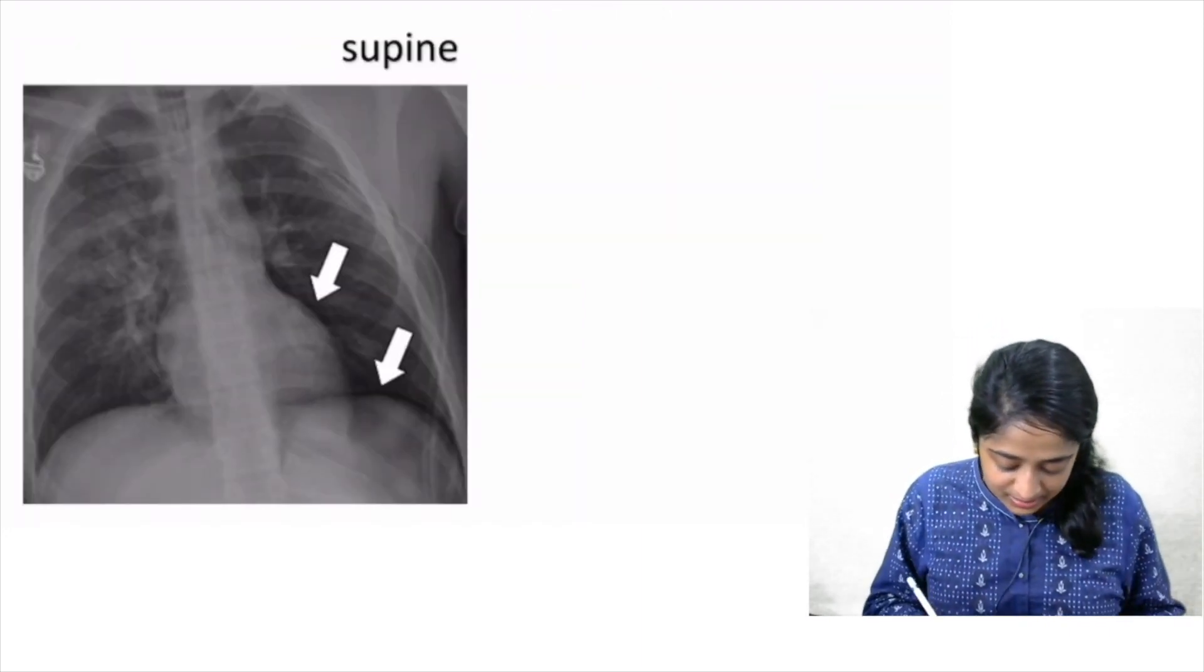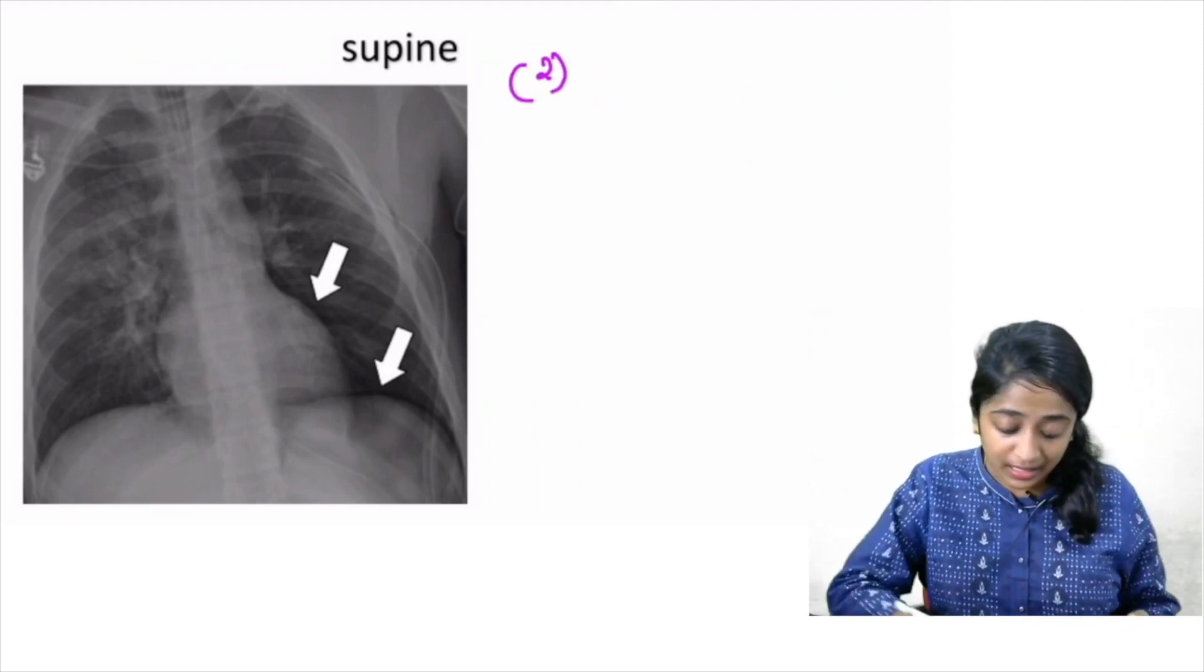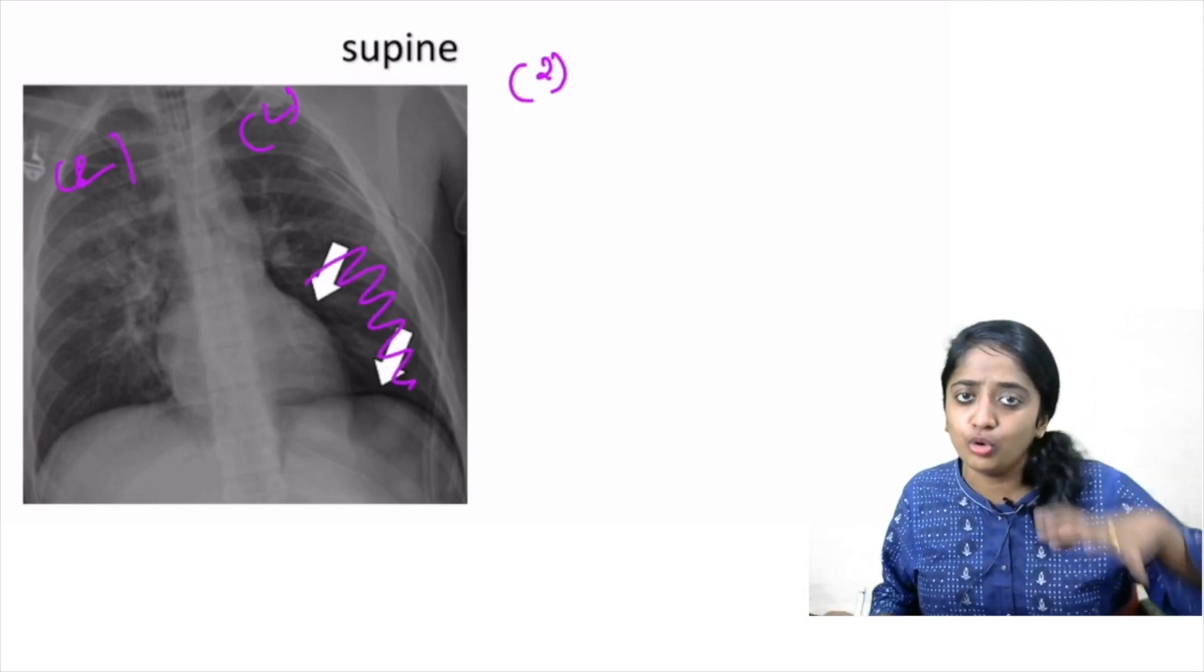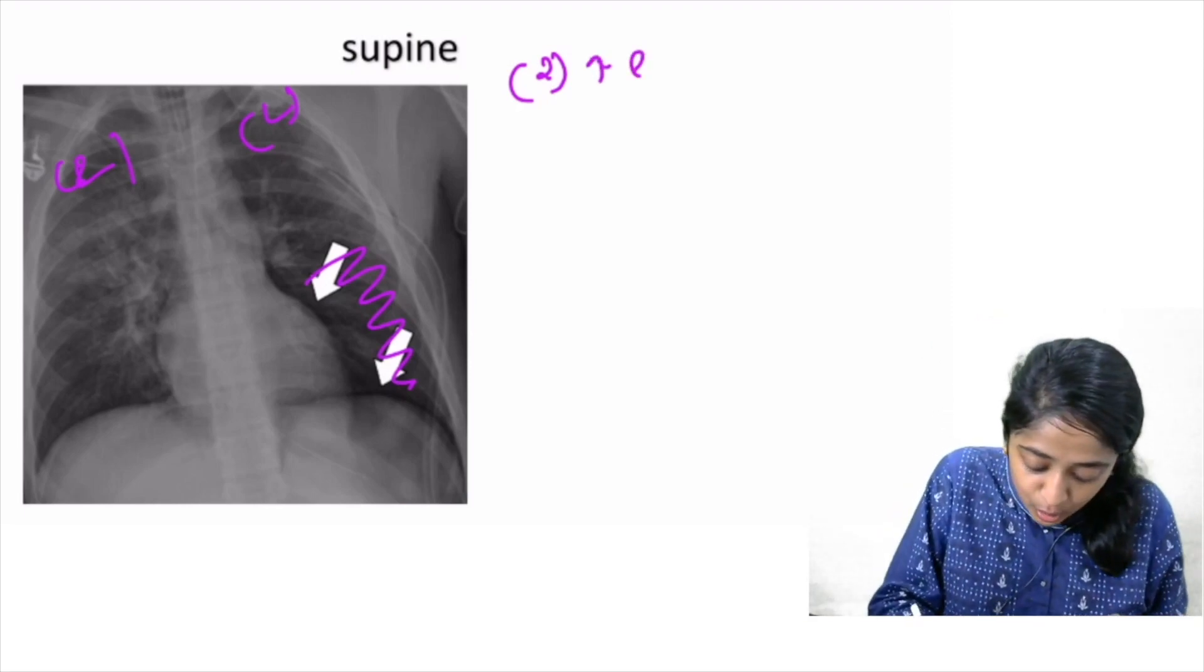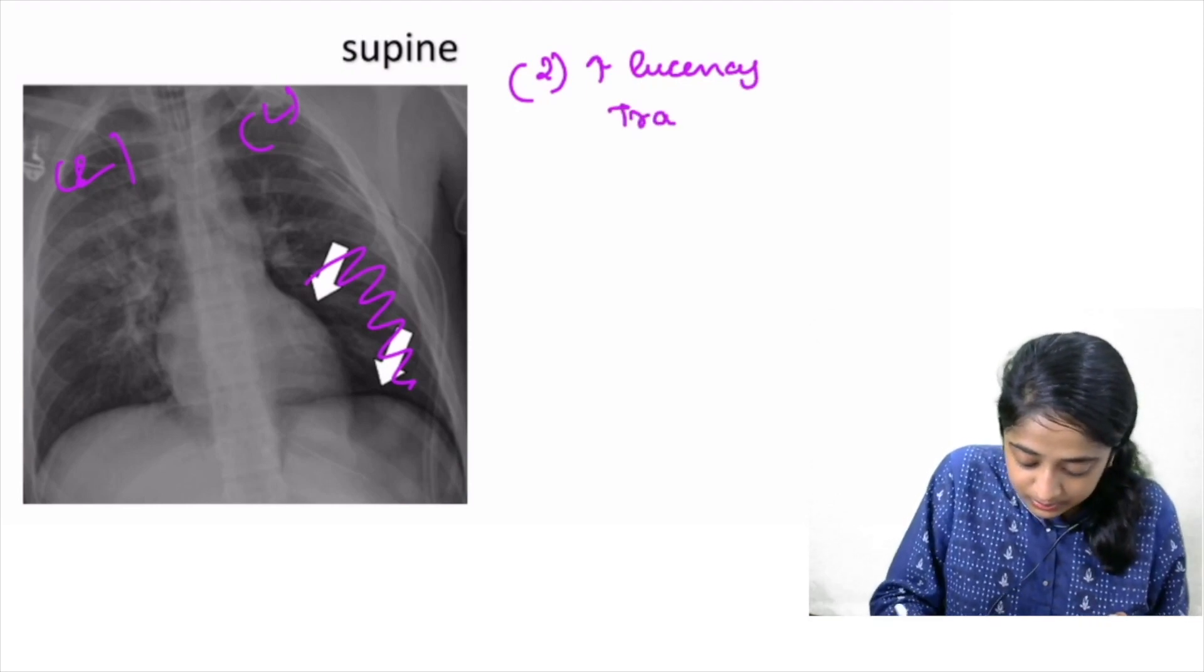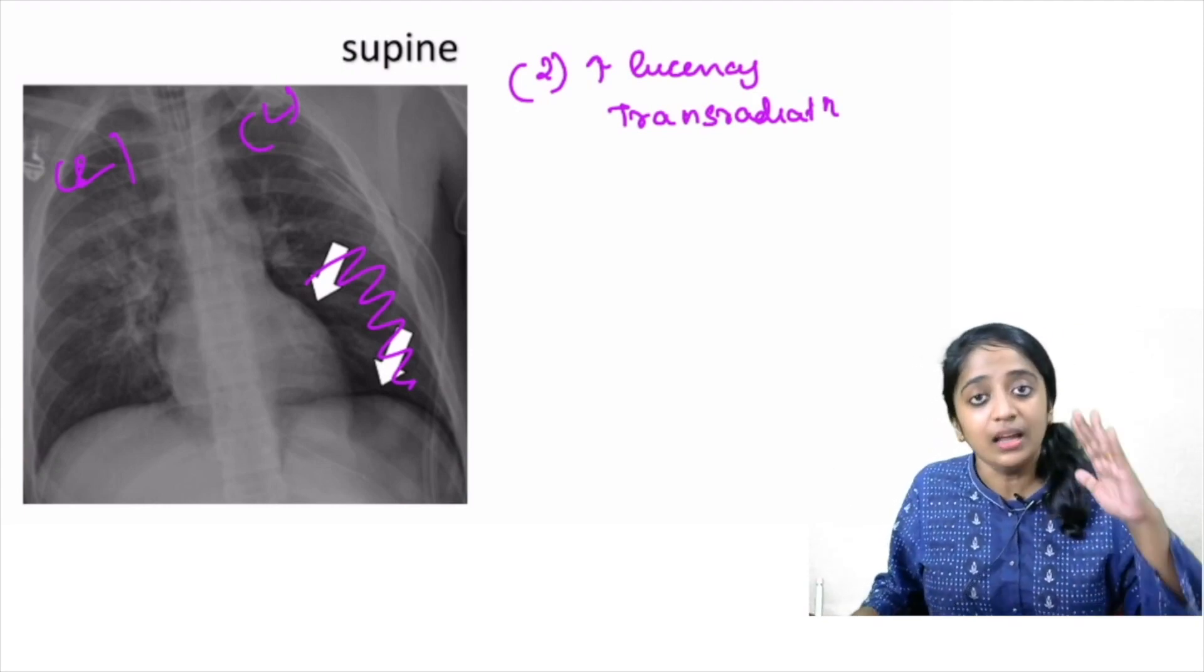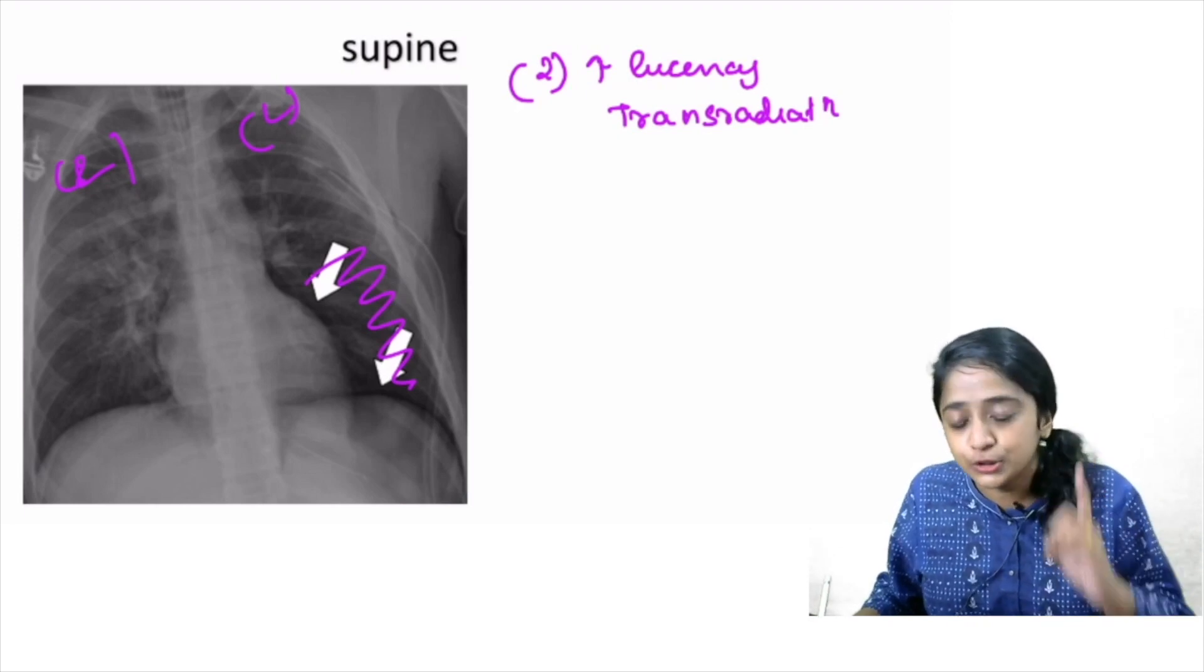Now let's see the second sign of supine radiograph. So look at the radiograph given to you. Compare the right and the left side. You can see that the lower lung field on the left side is much more lucent, that is transradiant. So increased lucency or transradiancy of a hemithorax. Transradiancy of the hemithorax in suspected case of pneumothorax is an evidence of pneumothorax on supine radiograph.